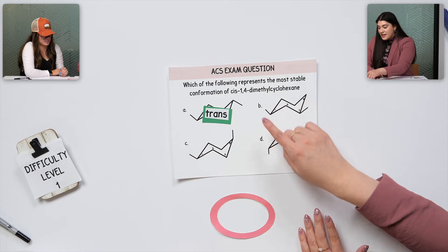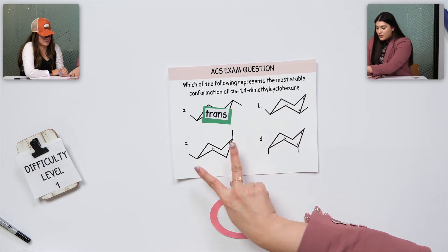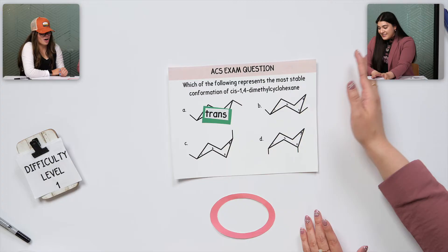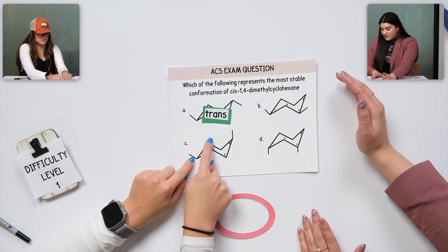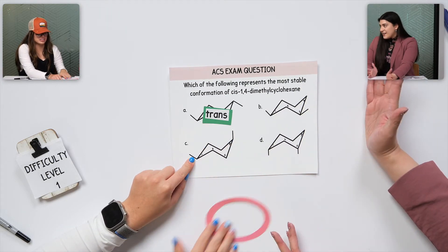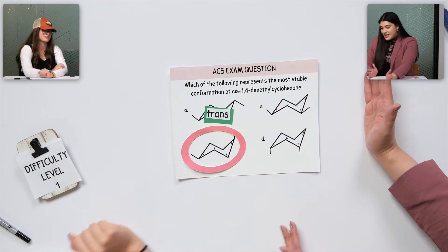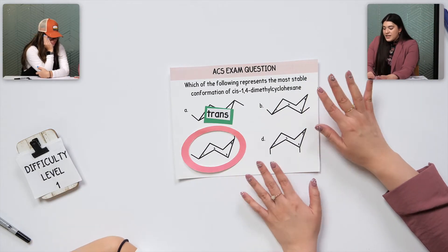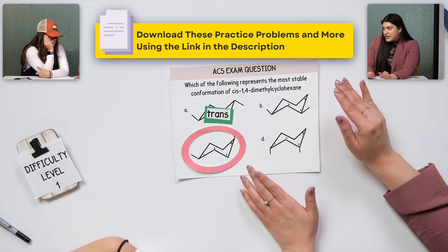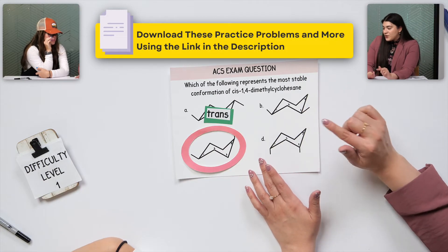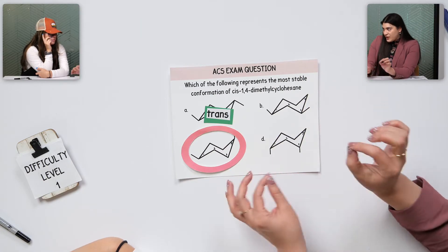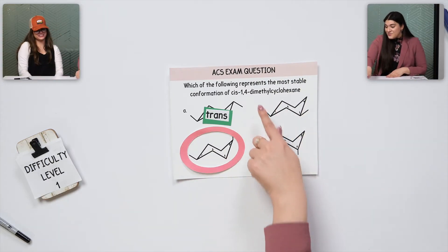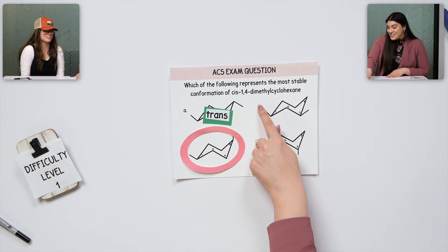You have to have two methyl groups, one at position one and another at position four. Oh — now I realize 1, 2, 3, 4. Even if I counted this way it's going to end up the same, so it's this one for sure. The main thing we have to look at is whenever we do the chair flip, that's when numbering does matter because we want to number in the same direction for each one.